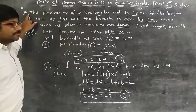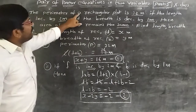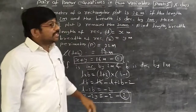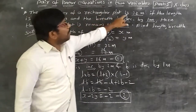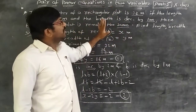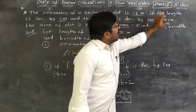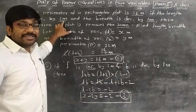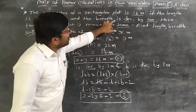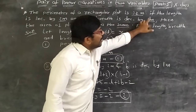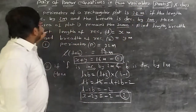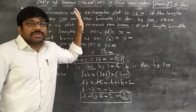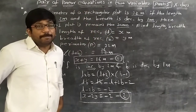The first problem — observe carefully. The perimeter of a rectangular plot is 32 meters. That is the first condition. Next, if the length is increased by 2 meters and the breadth is decreased by 1 meter, then the area of the rectangular plot remains the same. Find the length and the breadth.